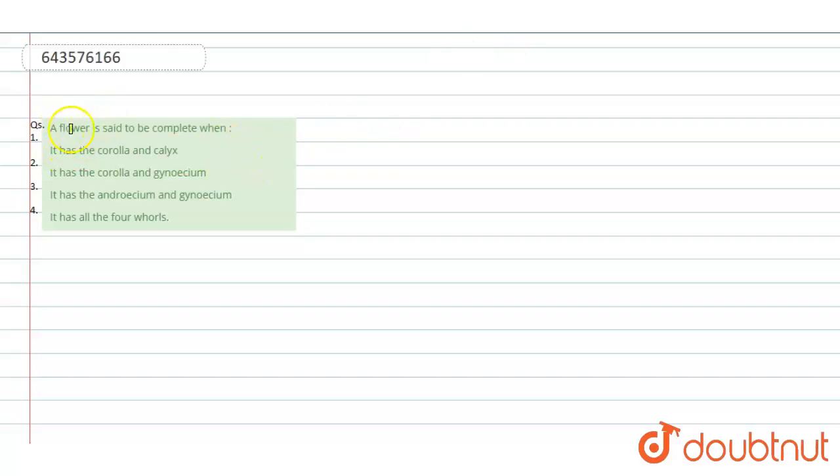They are asking: a flower is said to be complete when. So first option is given, it has the corolla and calyx. Second is given, it has the corolla and gynosium.